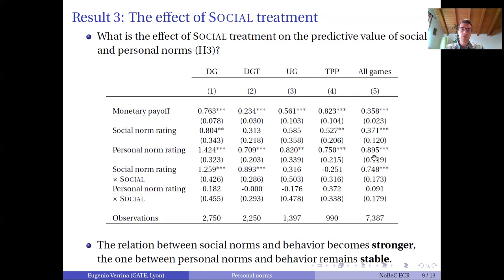The next step is looking at the effect of the social treatment. We are mainly interested in the interaction between the treatment and the weight that people put on social norms. We find that this weight increases, as predicted, for two out of four games and also for the pooled dataset. Interestingly, the weight that people put on personal norms remains unaltered.